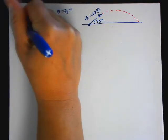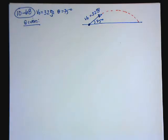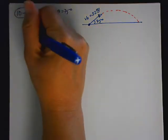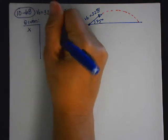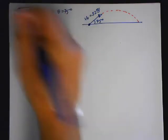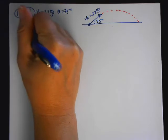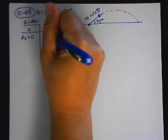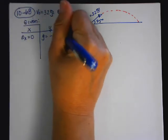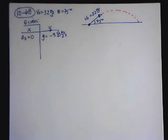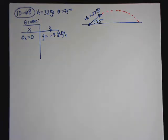When I do projectiles, it's a lot easier to separate the horizontal and vertical motion, so I'm going to do an X and a Y given. I always know that A-X is 0 and G is equal to negative 9.8. Why bother writing it? Because a lot of the equations have four variables, and writing it down reminds me I can see it.